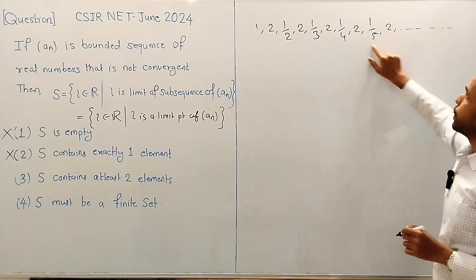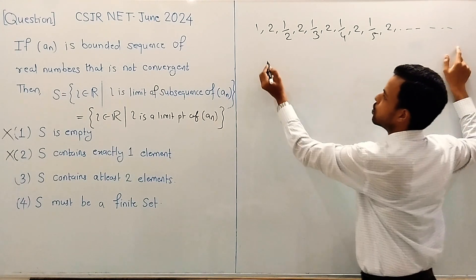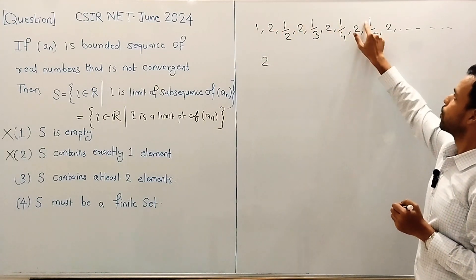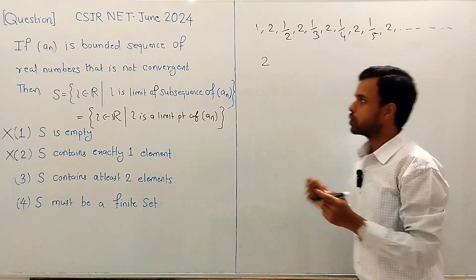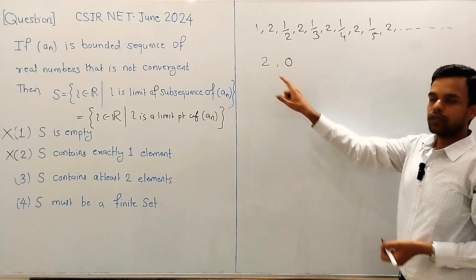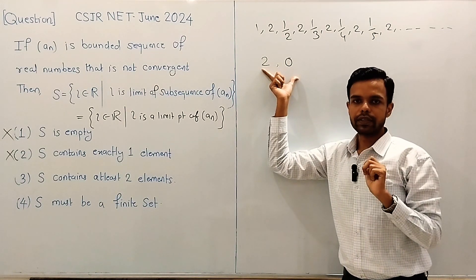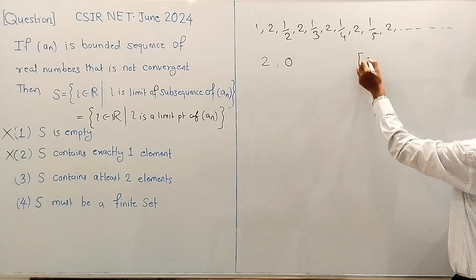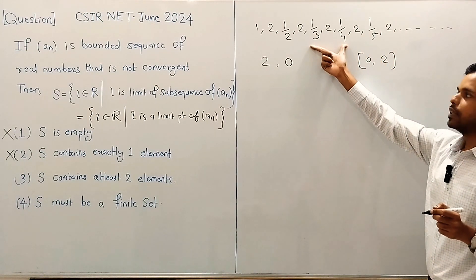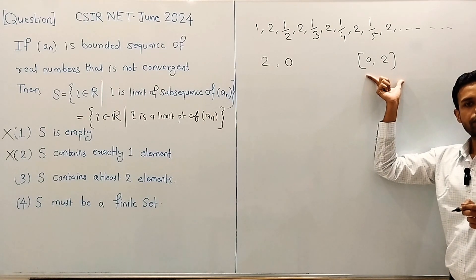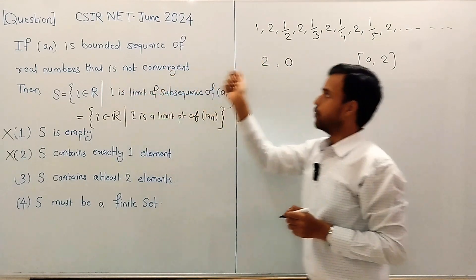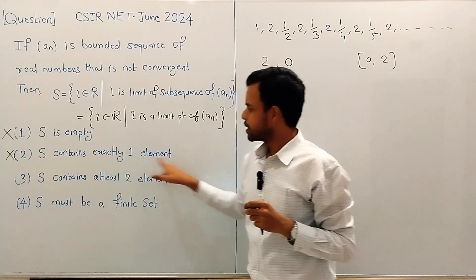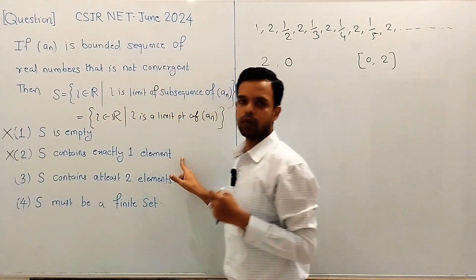Clearly, 2 is repeated infinitely many times in this sequence, so 2 is one limit point. And it clearly has a subsequence 1, 1/2, 1/3, 1/4, 1/5, and so on, which converges to 0, so 0 is another limit point. This sequence has exactly two limit points and is bounded since every term lies in the closed interval [0, 2]. So S contains two elements — option two is discarded.